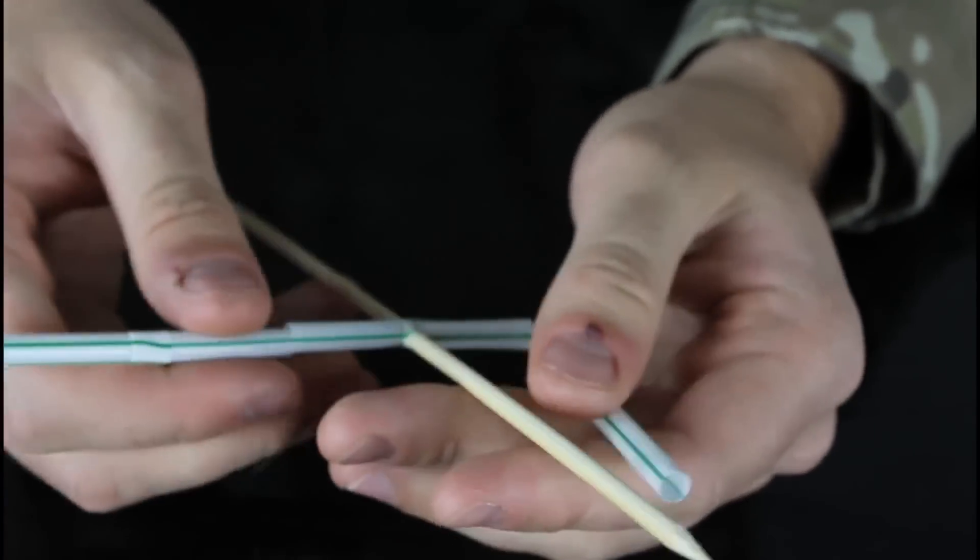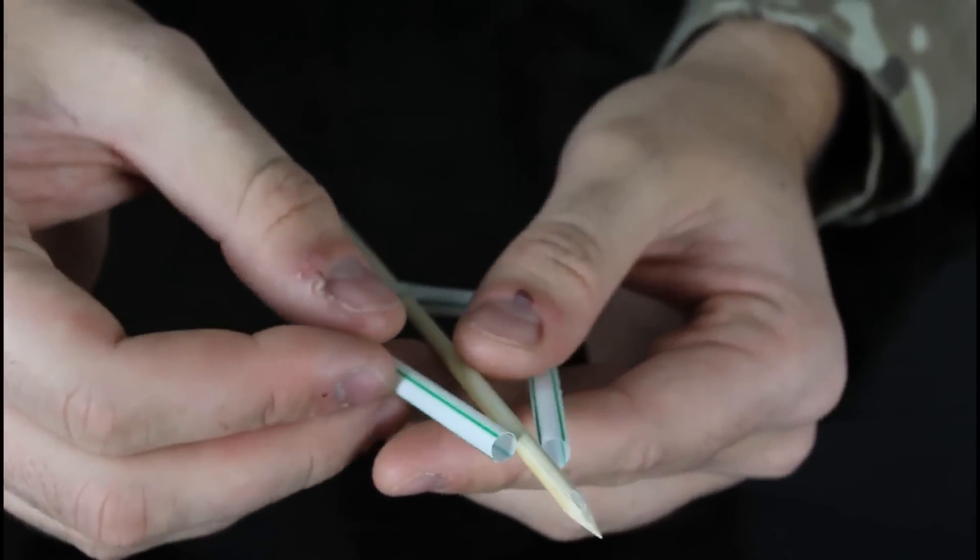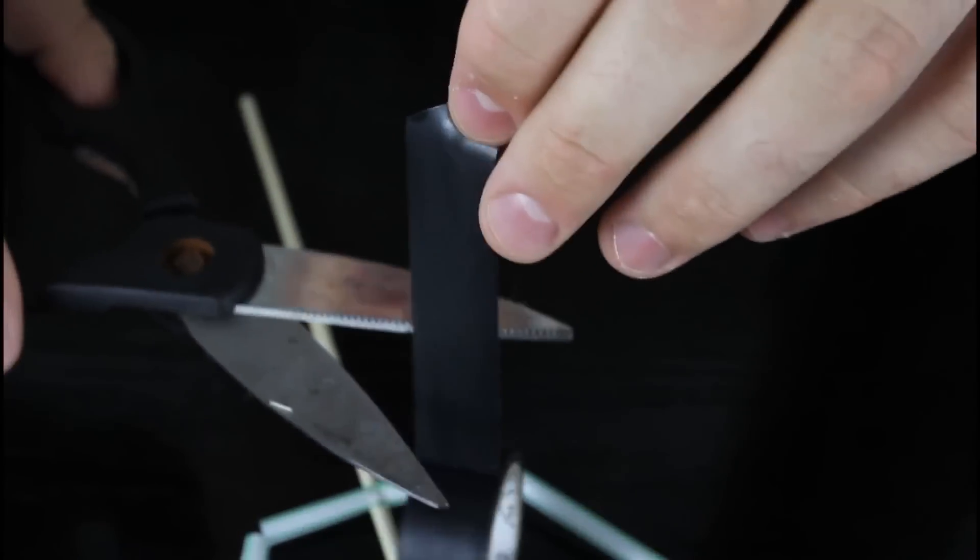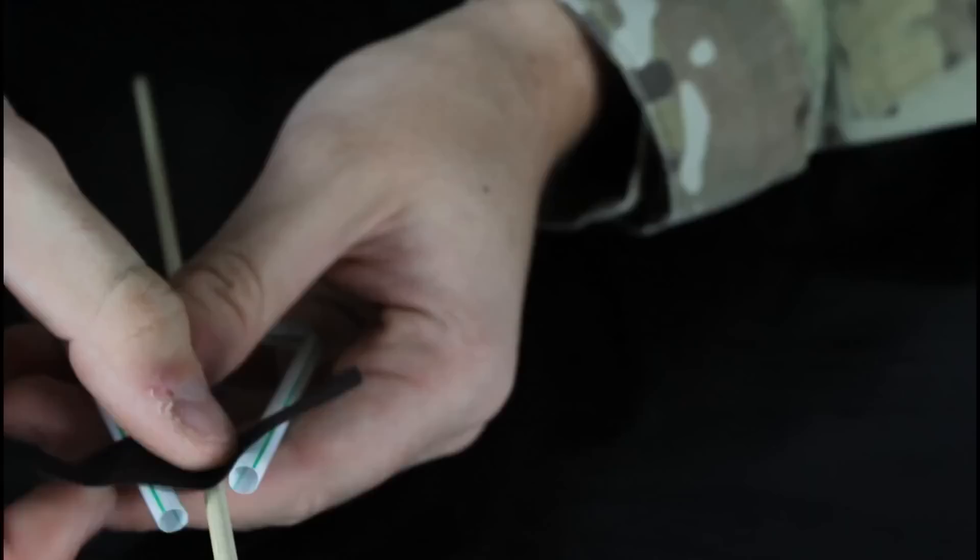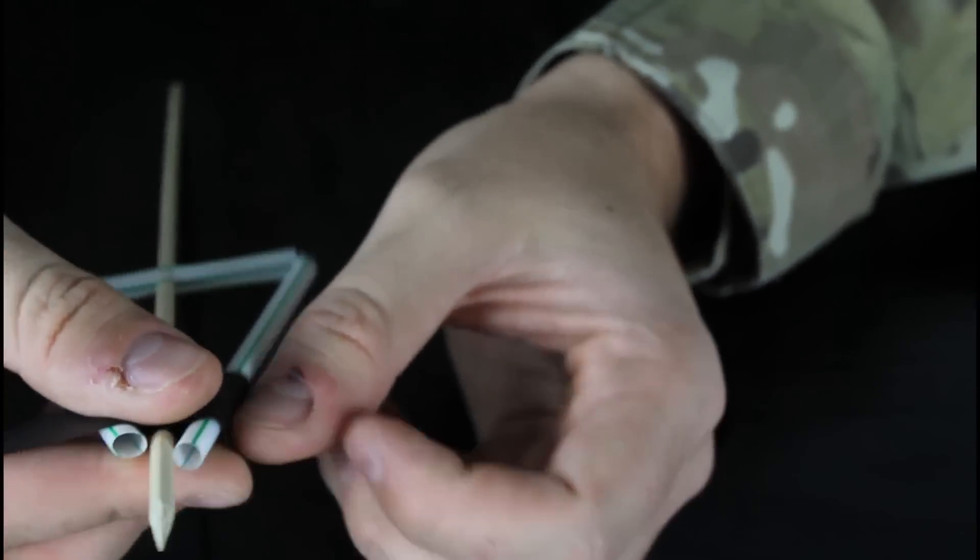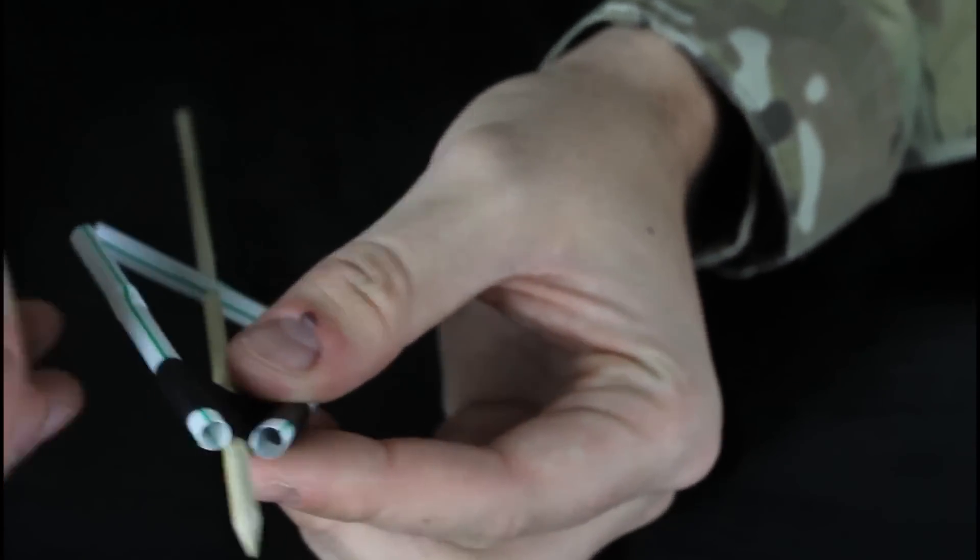And now we're gonna fold it this way and that way. Oh yeah, I forgot about that—we're gonna need electric tape. Alright, grab a small piece of electric tape and just tape all this together like this, and around.